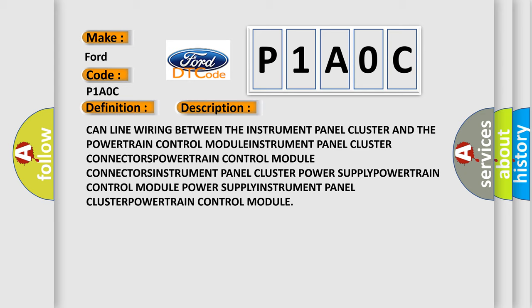And now this is a short description of this DTC code: CAN line wiring between the instrument panel cluster and the powertrain control module, instrument panel cluster connectors, powertrain control module connectors, instrument panel cluster power supply, and powertrain control module power supply.